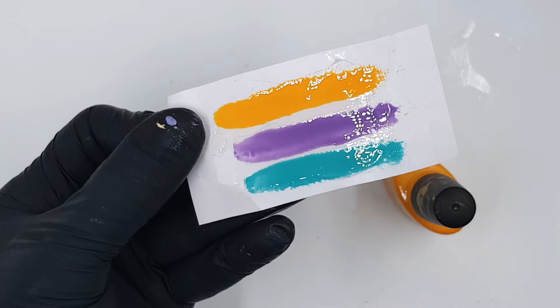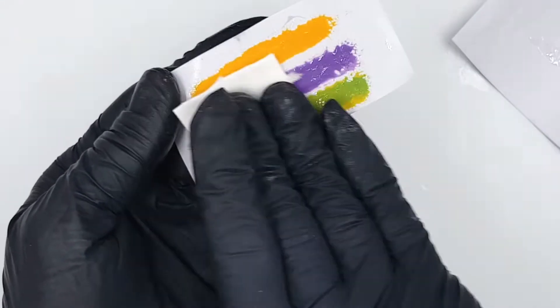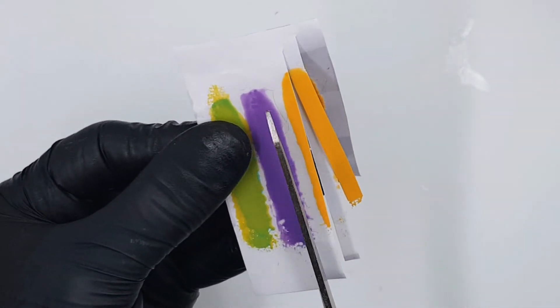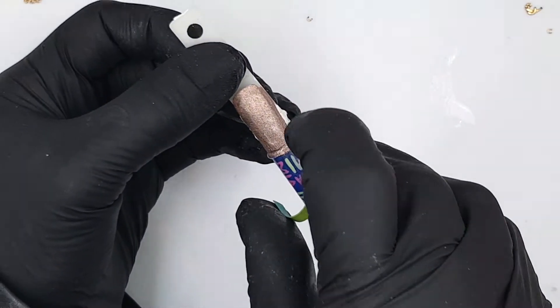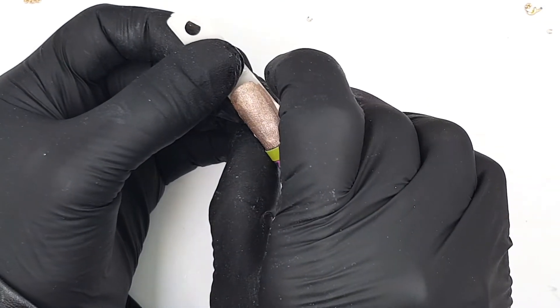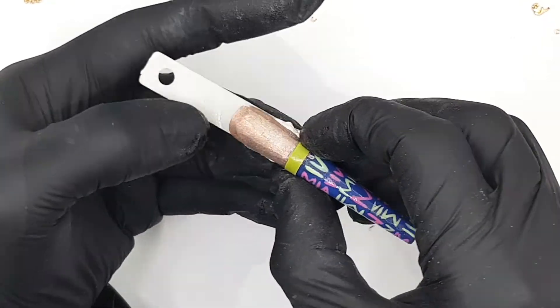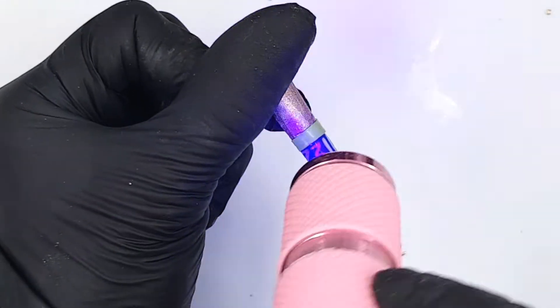Halston was really famous for his smocked waist dresses, so I want to create my own waistband in my design. Just use the gel lock in the colors, then you can cut it and apply it like a waistband on the nail. This is really fast to create. I'll use the Plexi Builder gel clear to fix my nail waistband on the nail.